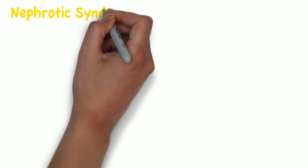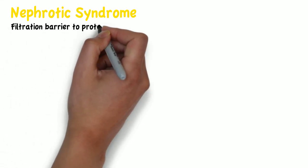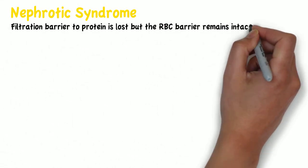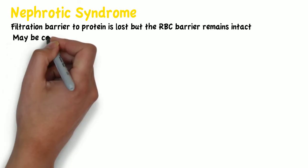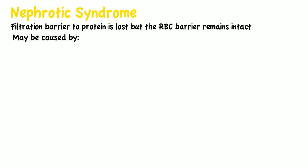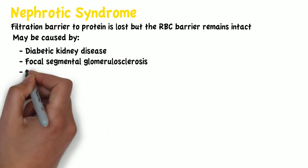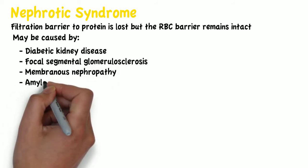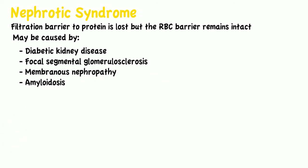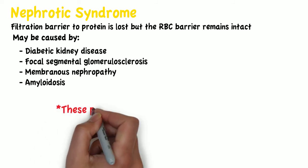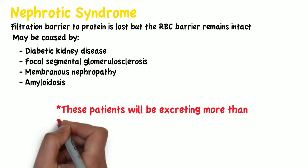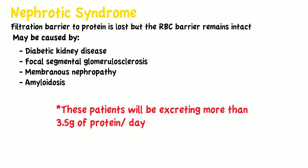In nephrotic syndrome, the filtration barrier to protein is lost but the red blood cell barrier remains intact. This may be caused by many different things, including diabetic kidney disease, focal segmental glomerular sclerosis, membranous nephropathy, or amyloidosis. These patients will be excreting more than 3.5 grams of protein per day, and this will trigger a cascade of problems.